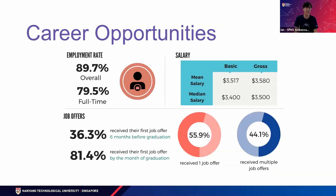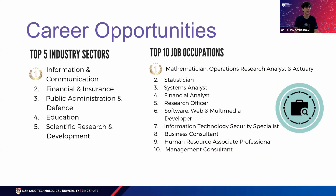Since we are math students, we like statistics and numbers. Our employment rate for students in the Mathematical Sciences is about 89.7%, based on statistics from last year's graduating batch. As you can see, there is definitely something for everyone. Some examples of past occupations include statistician, financial analyst, research officer, and data analyst.